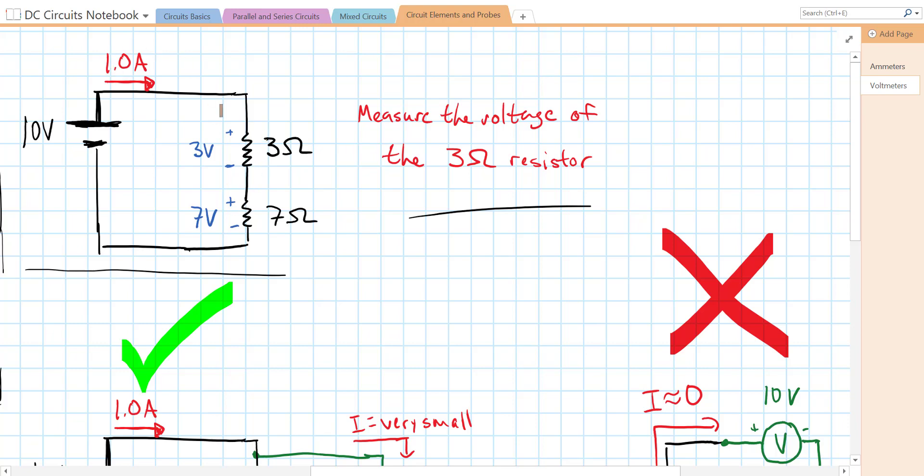That also means that we should be getting 3 volts across this 3 ohm resistor. 1 amp times 3 ohms gives us 3 volts. That's what we predict, but if we're going to measure the voltage across the 3 ohm resistor, let's take a look at the correct and incorrect way to do it.